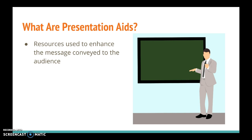So rather than simply hearing you give your speech, there's now this added element. We're using all five senses, or at least we're triggering more than one sense at a time — they're no longer just hearing our speech. We might have an auditory aid where we play some kind of sound clip that we can't describe in words. We might have a visual aid such as a PowerPoint, a picture, or a poster board of some type — something that your audience can see. We might have an olfactory aid, like a fragrance sample that our audience can smell.